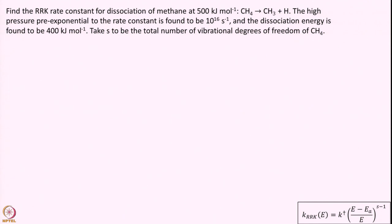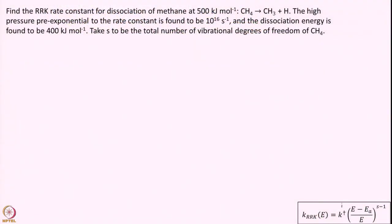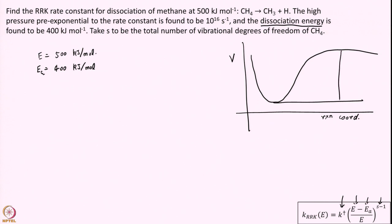Let us work out these numbers. E is easy: 500 kJ/mol. Ea is easy: 400 kJ/mol — this is the dissociation energy. The reaction looks like some profile along a reaction coordinate, and this energy of 400 is effectively the activation energy — the minimum energy required for the bond to break.